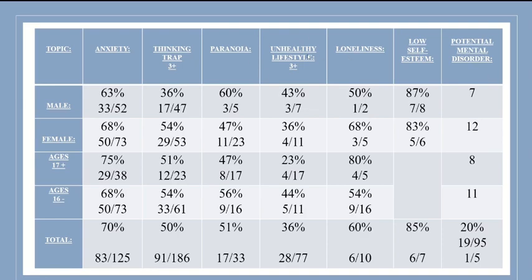The next category is unhealthy lifestyle — the spiritual, intellectual, physical, and social categories — and 36% said they do not do two or more events each week across those four categories. For loneliness, 60% said they feel lonely at all times. For low self-esteem, 85% said they had low self-esteem. That just goes to show we're not alone in this — we all feel the same feelings. For potential mental disorders, one out of five people, or 20% of the population, is said to have a mental disorder.